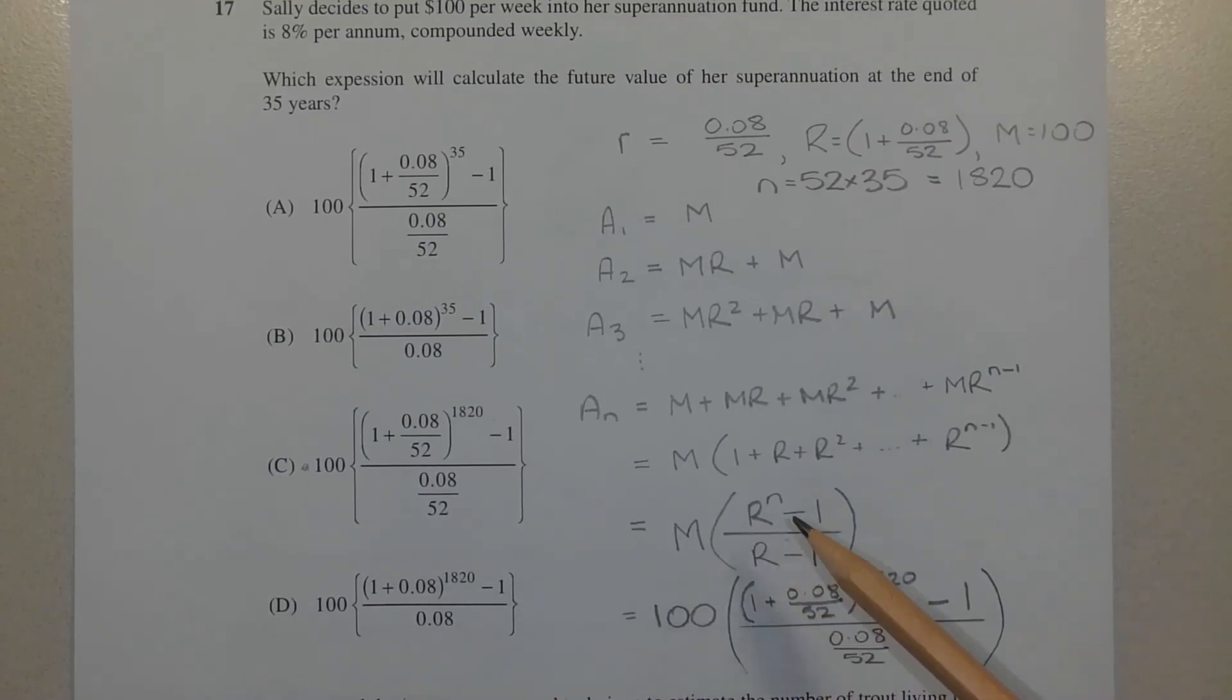Now substituting the values for capital R and M: capital R is 1 plus 0.08 over 52, and capital R minus 1 is 1 plus 0.08 over 52 minus 1. The 1's cancel, so you end up with 0.08 over 52 in the denominator.